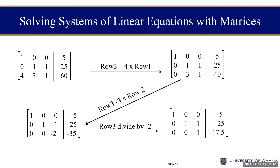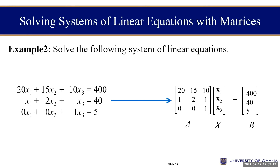As we've gone through Example 1 already, let's look at Example 2. Given that equation one is 20x₁ + 15x₂ + 10x₃ = 400, and equation two and equation three are also shown. Now, what we said about the Gauss-Jordan application is that first of all we need to convert or transform the systems of linear equations into matrix form.